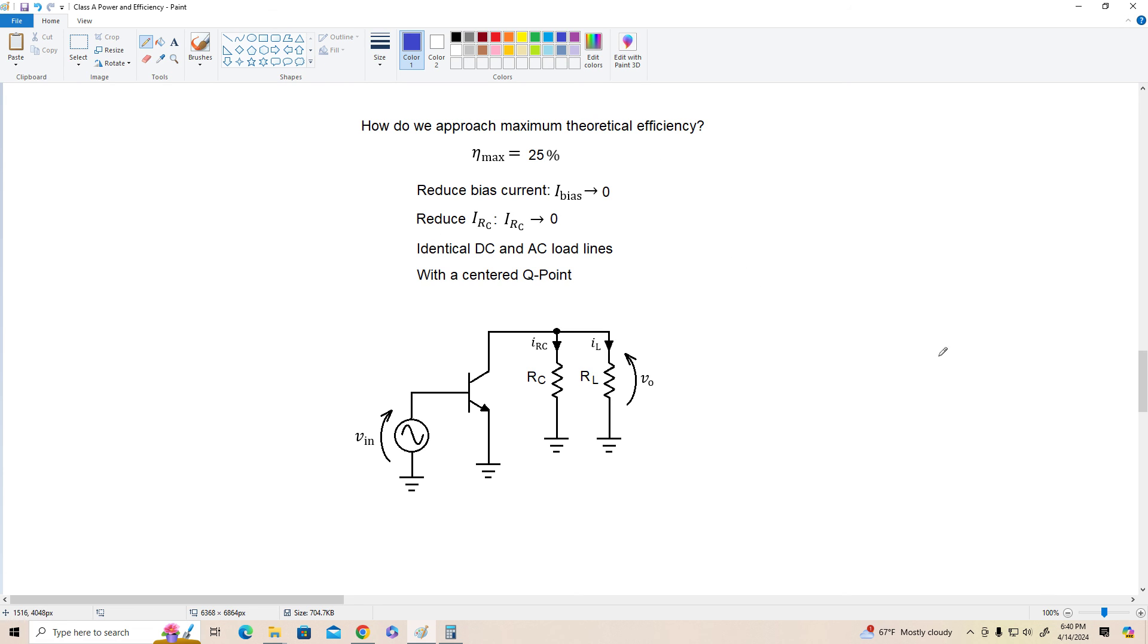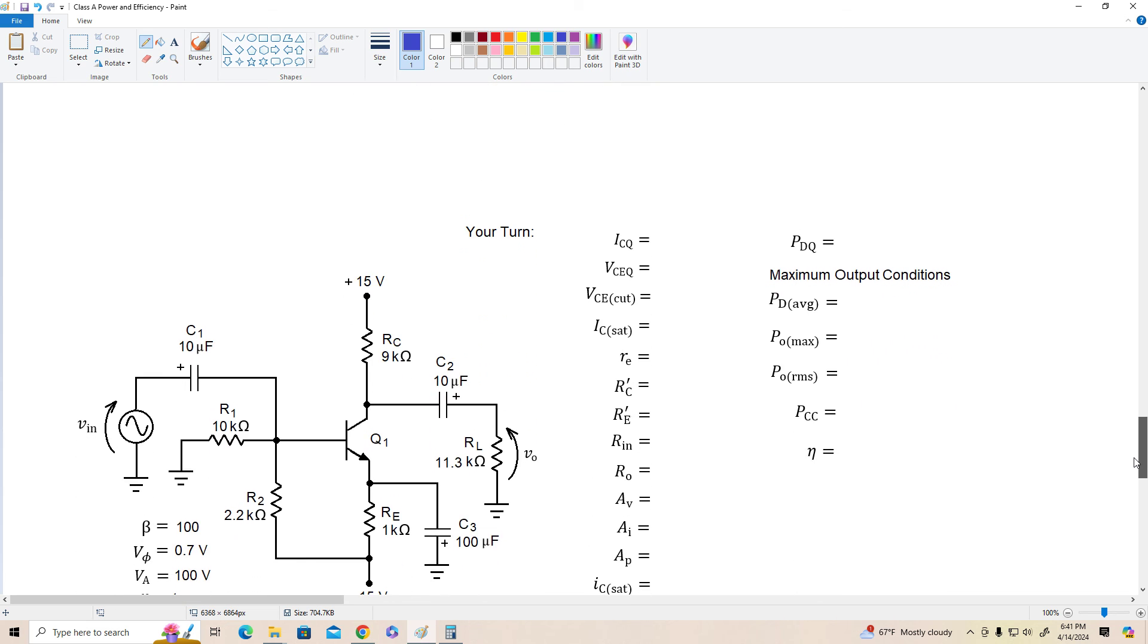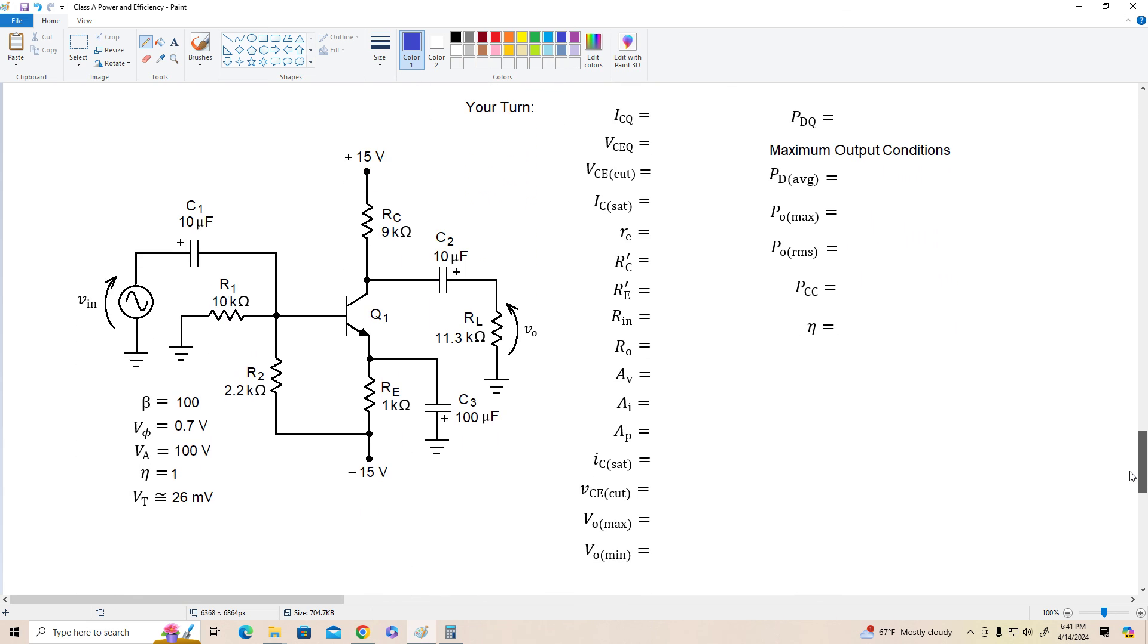So let me leave you guys with a problem to do. It's your turn here. I've got an amplifier similar to what we've used before and I want you guys to do the complete DC, AC analysis and find the maximum power out, the power absorbed from the power supplies and the efficiency of this amplifier. This shouldn't be too bad, just do the best you can and we'll probably go over this amplifier again sometime in the future. But for now that's all I've got for you and I'll see you guys in the next video.